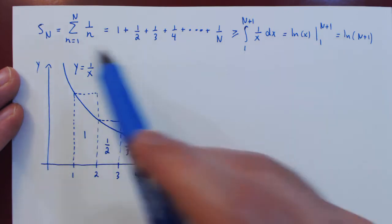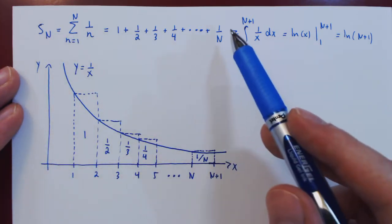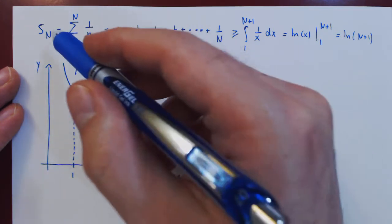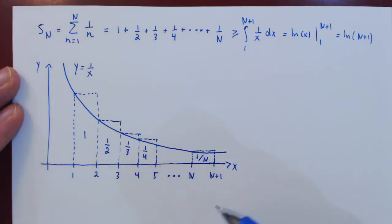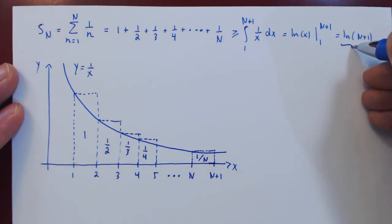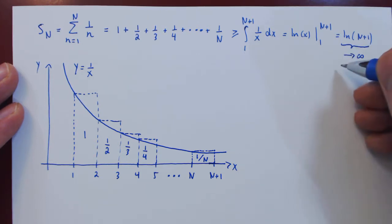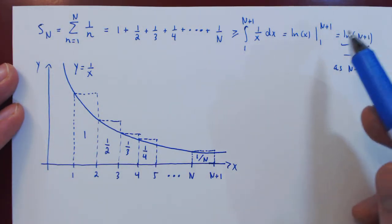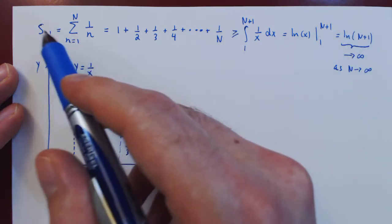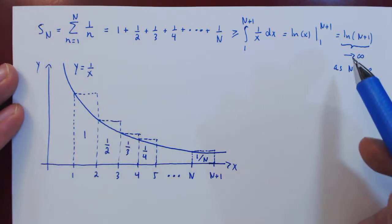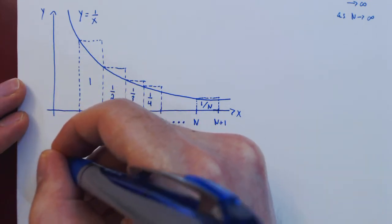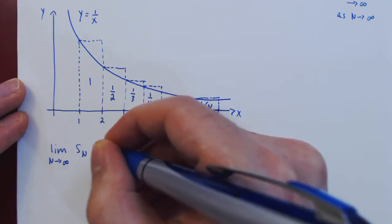So, look at the implication here. For any N, S_n is always at least as big as ln of N plus 1. So what happens as we let uppercase N, the upper bound of summation, tend to positive infinity? Well, ln of N plus 1 goes to infinity as N goes to infinity. So if S_n is always at least as big as ln of N plus 1, and as N tends to infinity the smaller term goes to infinity, then the larger term has no other option than to also blow up to positive infinity. We have now shown that in the limit as N goes to infinity, S_n also goes to infinity.